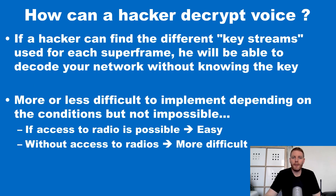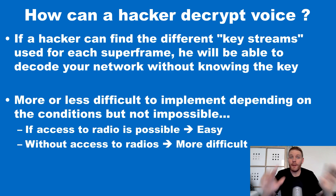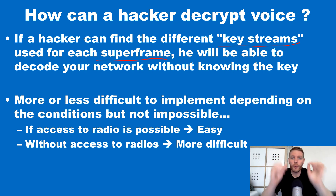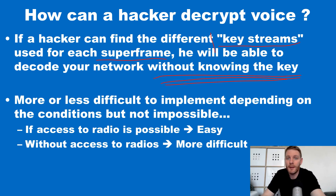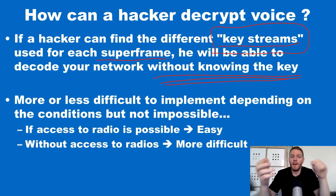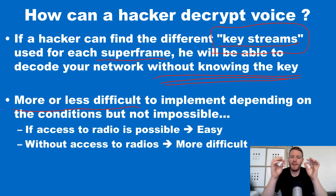How can a hacker decrypt voice on your network? If a hacker can find the different keystreams used for each superframe — one keystream for one superframe — he will be able to decode your network without knowing the key. It is important: just by reproducing the keystream used for each superframe, because the IVs are predictable, the keystream used for each superframe will be the same and will be predictable. It is more or less difficult to implement depending on the conditions, but it is not impossible.